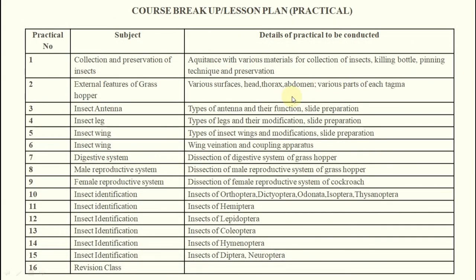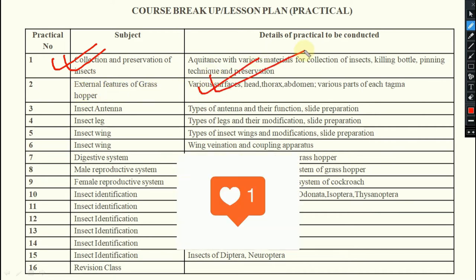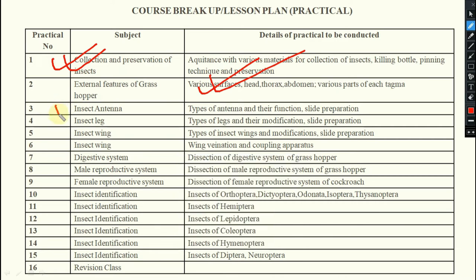Now for the practical component: the first topic is collection and preservation of insects — how to collect insects, how to kill them, how to preserve them for a longer period using different methods, and how to do pinning properly. Then we will examine the external features of a grasshopper — we will dissect the insect and observe those features.